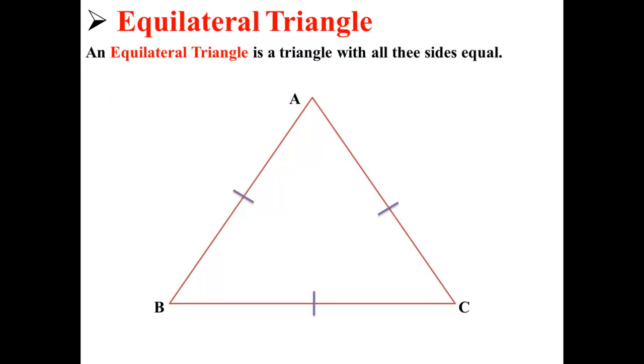An equilateral triangle, as shown below, is a triangle with all three sides equal. So here AB, AC, and BC are all of the same length.